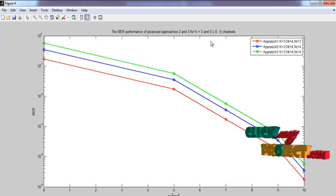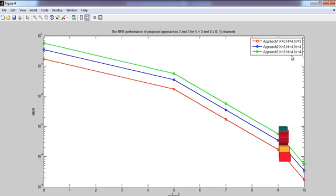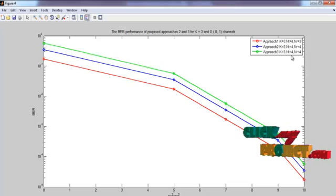two and three. And here the number of users are three. And here the G of 0,1 channels are used. Here the number of transmit antennas is four, number of receiver antennas is three. And